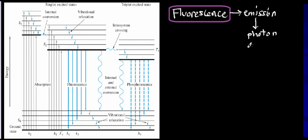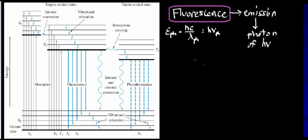We typically abbreviate light in this context as HV. Every photon of light has a particular energy, so I'm going to write a few equations needed to fundamentally understand this. Number one, we have the famous equation where the energy of a photon equals Planck's constant times the speed of light in a vacuum divided by the wavelength. And the frequency of the photon equals the speed of light in a vacuum divided by the wavelength.